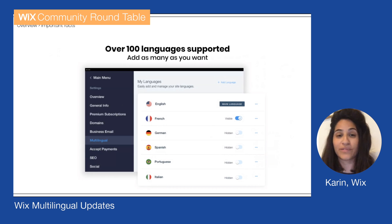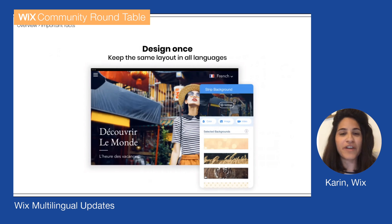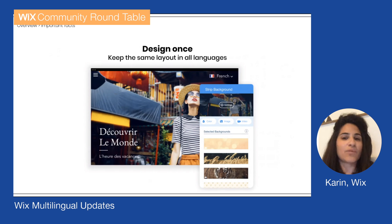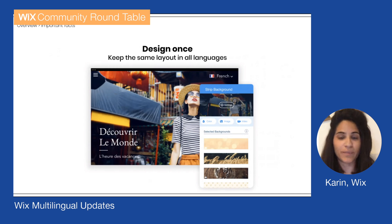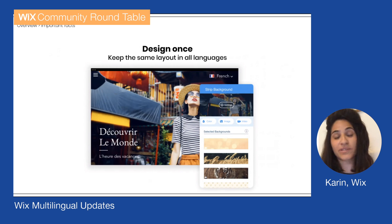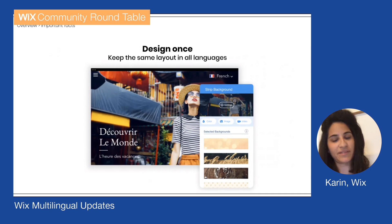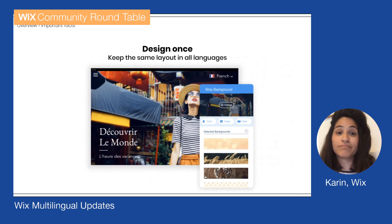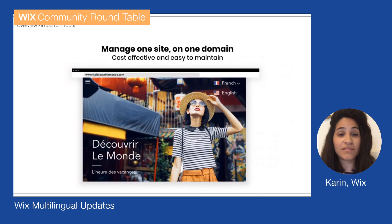We've just added a few more so we now support more than 100 languages. A really important feature is that you can design once. Before Multilingual, you'd have to create two separate sites, buy two different domains, and design each one separately. With Wix Multilingual, we keep the same layout for all languages — if you move one component in the editor, it moves in all languages. You design once for all languages and manage one site on one domain, which is very cost-effective and easy to maintain.